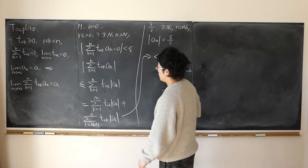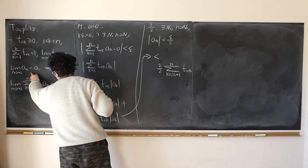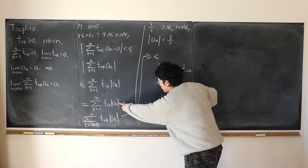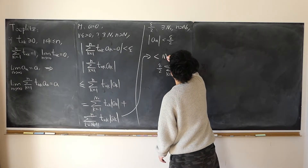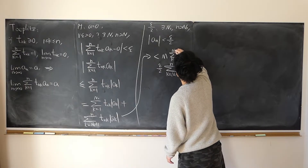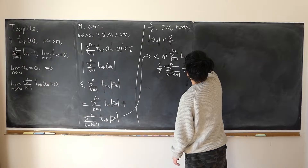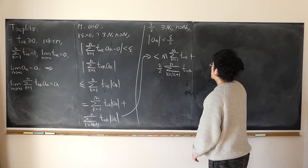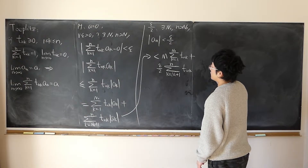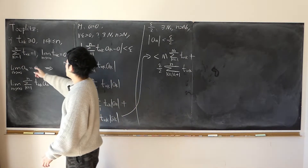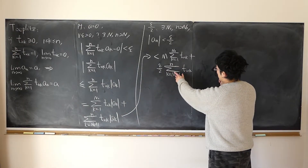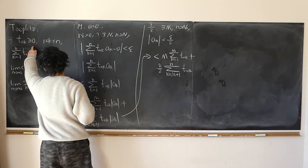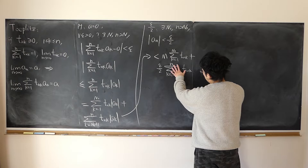For the first sum, because a(n) has a limit, a(n) must be bounded. Let's say bounded by some positive constant M. I replace every |a(k)| with M, take M out in front, leaving the sum from k=1 to N1 of t(n,k). Because t(n,k) is non-negative, this partial sum is no larger than 1, so the first sum is also loosened.